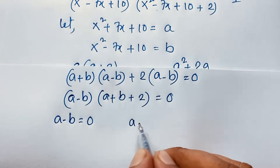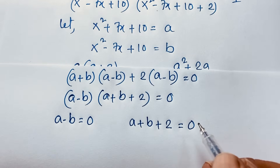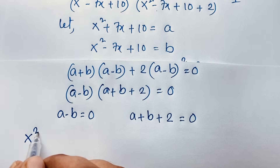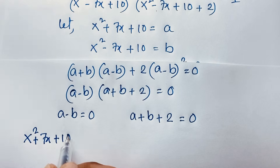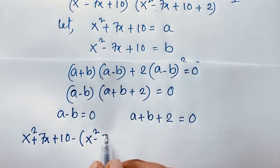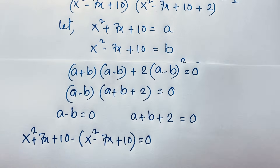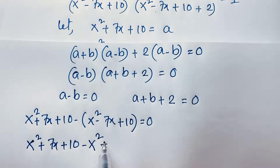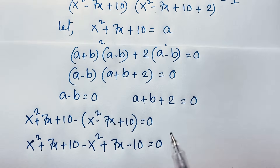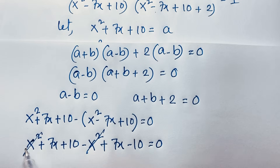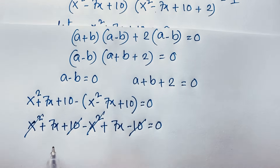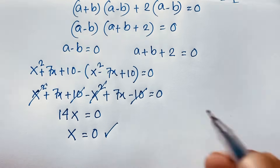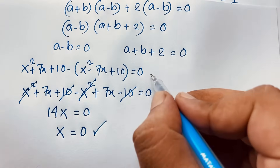So we find two cases. First case: a-b = 0. Substituting back: (x²+7x+10) minus (x²-7x+10) = 0. This simplifies to x²+7x+10 minus x² plus 7x minus 10 = 0, so 14x = 0, and dividing by 14: x = 0. This is our first final answer.